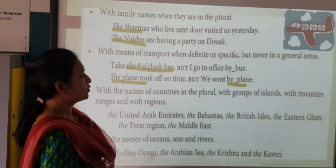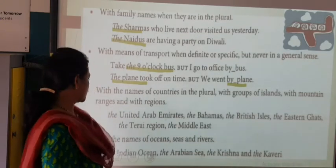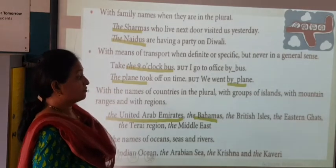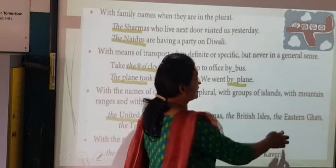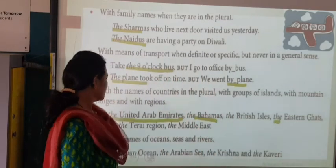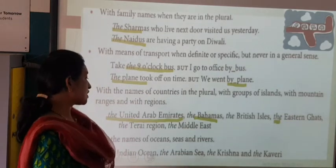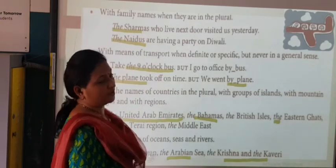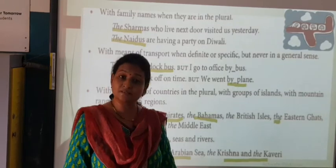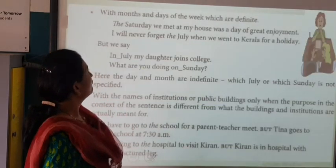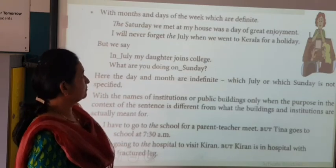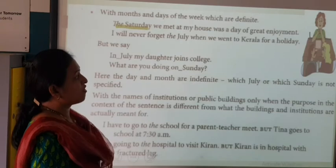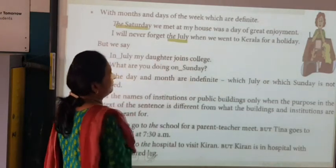With the names of countries in the plural, with groups of islands, with mountain ranges, and with regions: 'The United Arab Emirates', 'The Bahamas', 'The British Isles', 'The West', 'The Eastern Ghats' — here a vowel sound has come, so 'the' is pronounced as 'thee' — 'The Terai region', 'The Middle East'. With the names of oceans, seas, and rivers: 'The Indian Ocean', 'The Arabian Sea', 'The Krishna', and 'The Kaveri'. With months and days of the week when they are definite: 'The Saturday we met at my house was a day of great enjoyment.' 'I will never forget the July when we went to Kerala for a holiday.'